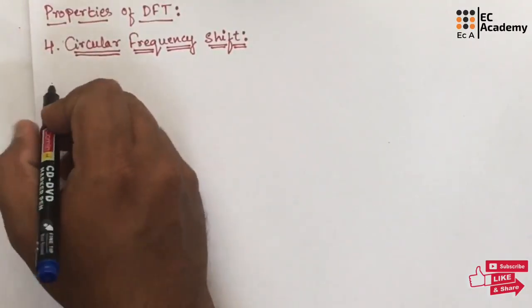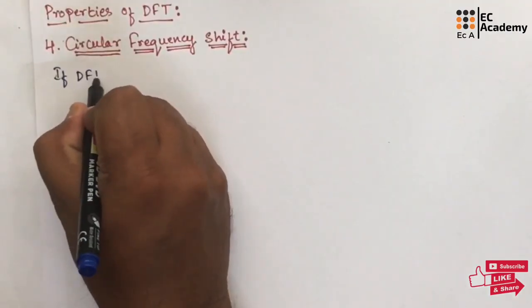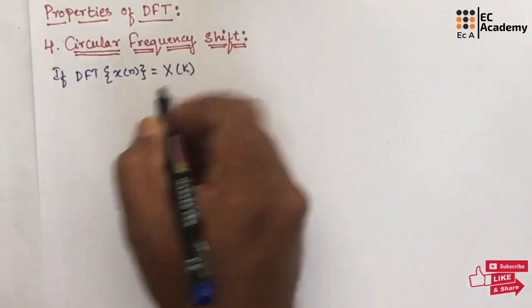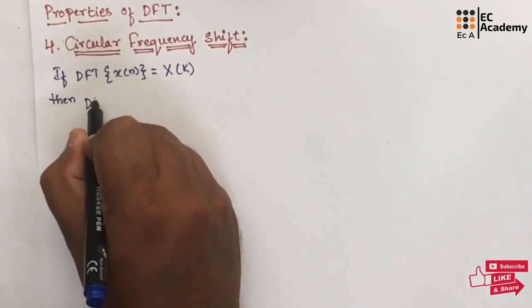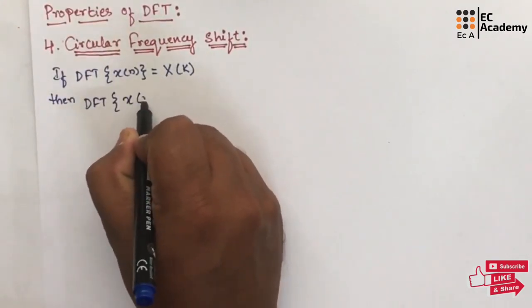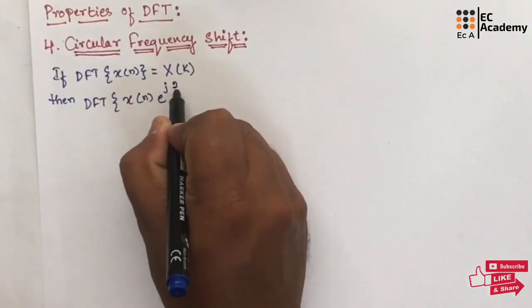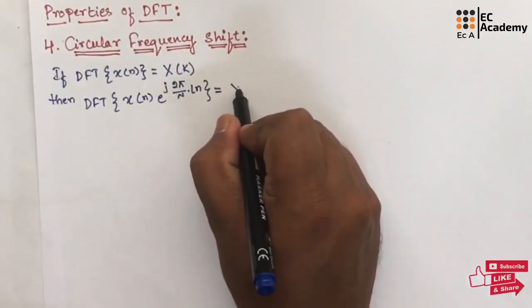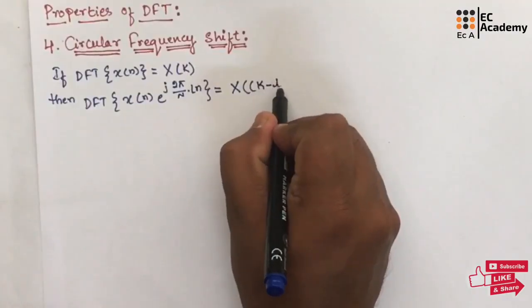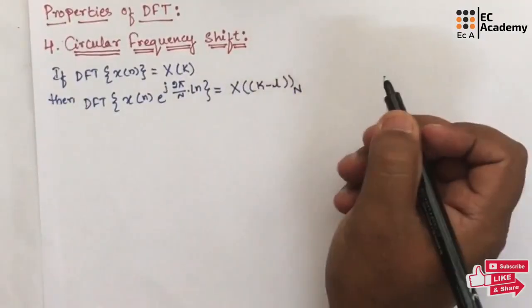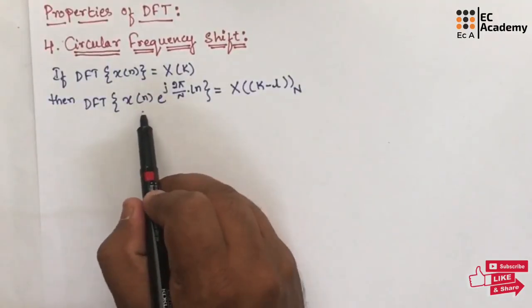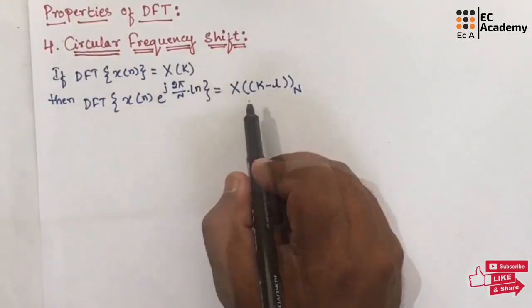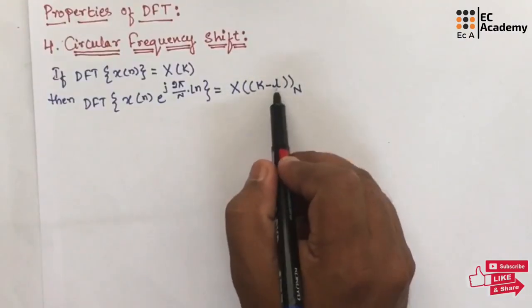First, let us write the statement. If DFT of x of n is equal to x of k, then we can write the DFT of x of n multiplied by e to the power of j 2 pi by N into Ln, which can be written as x of k minus L mod N.